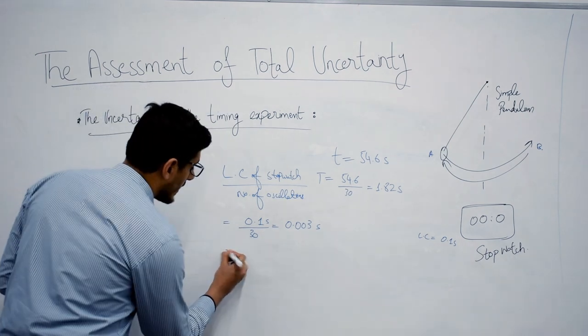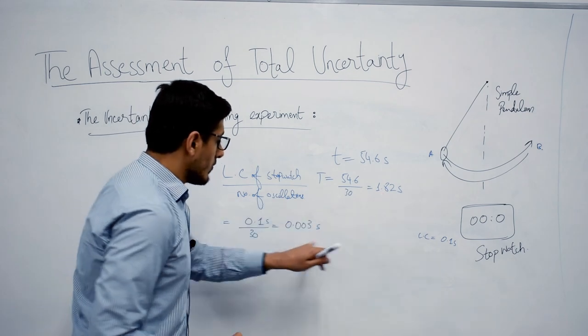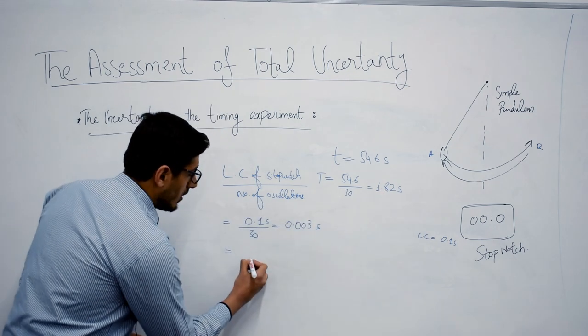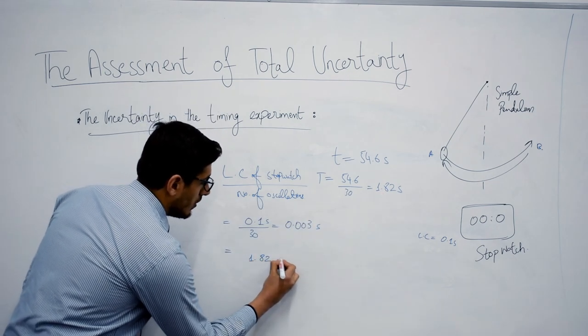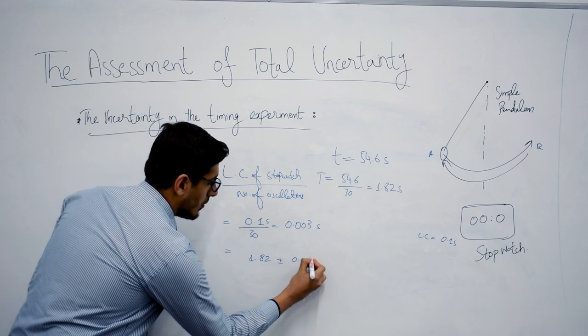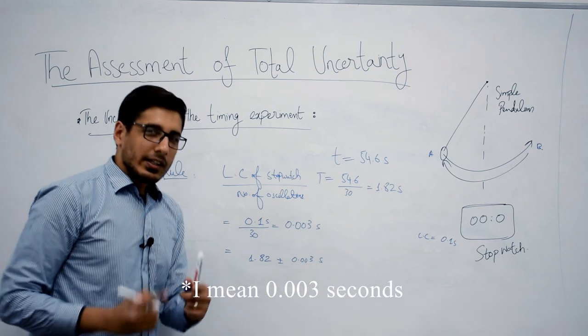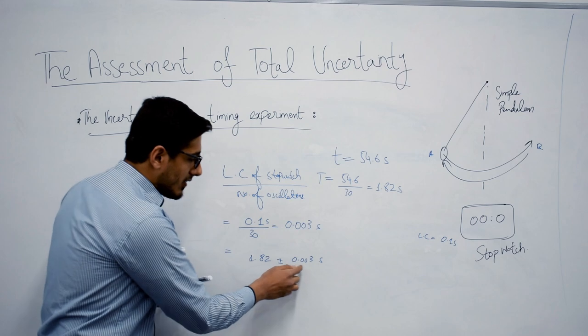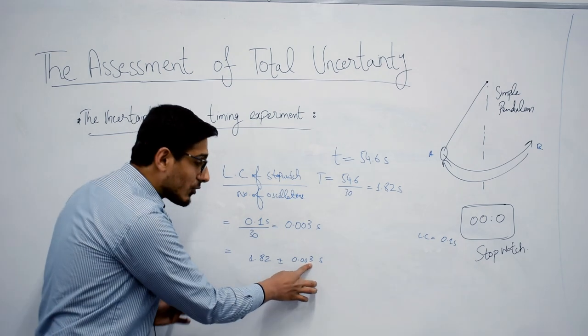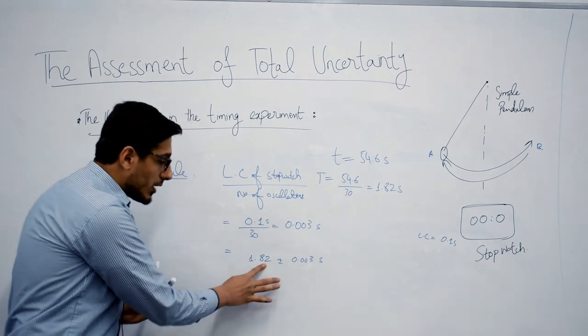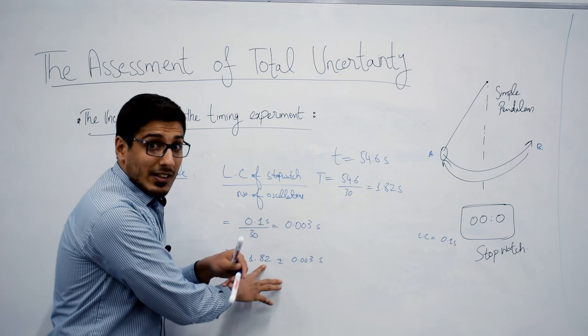So we can combine our measurement with our uncertainty: 1.82 plus minus 0.03 second. At this point you can see that the uncertainty is going till the third decimal place but my measurement is not going till the third decimal place.